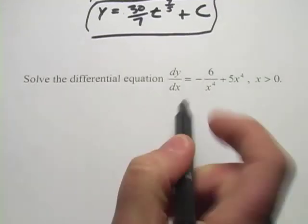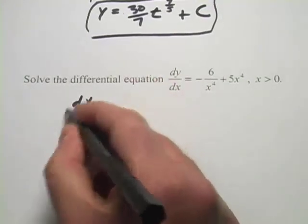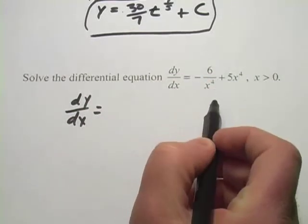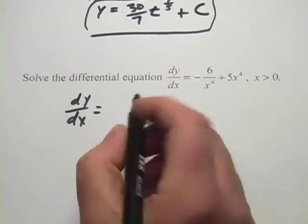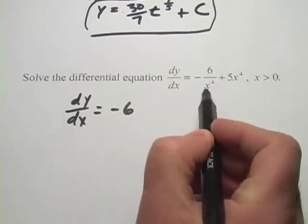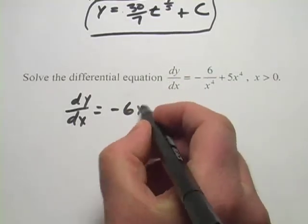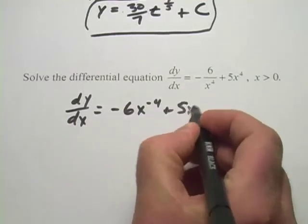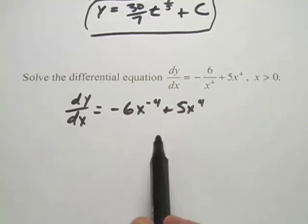So, actually, let me rewrite this first, dy/dx, in a way that will make it easier to apply this sort of reverse power rule that we're using. I'm going to call this negative six over x to the fourth, negative six times x to the negative fourth. And then we have our plus 5x to the fourth. Okay, so there's our function.